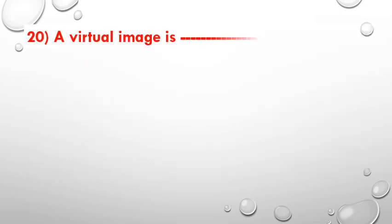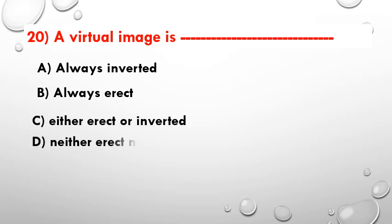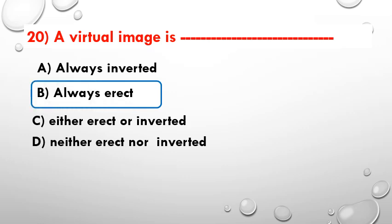A virtual image is — always inverted, always erect, either erect or inverted, or neither erect nor inverted? The answer is always erect. Observe the picture.